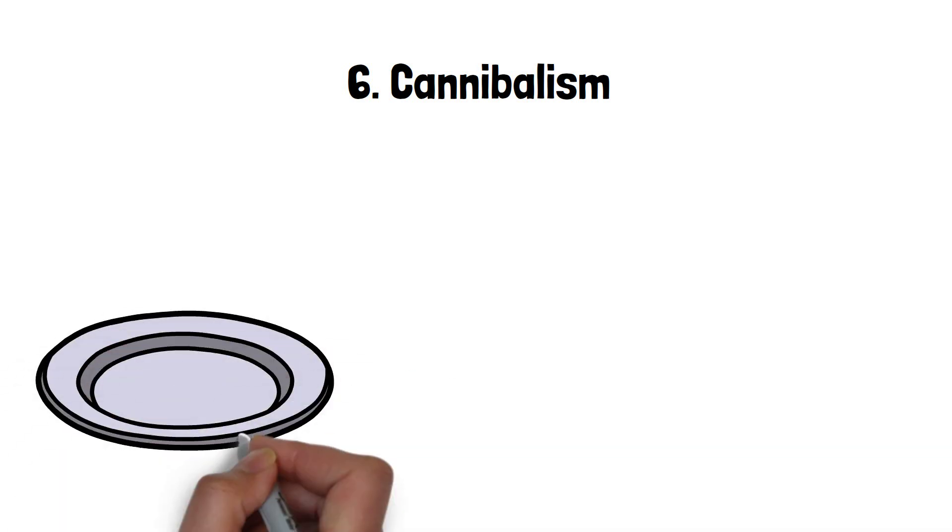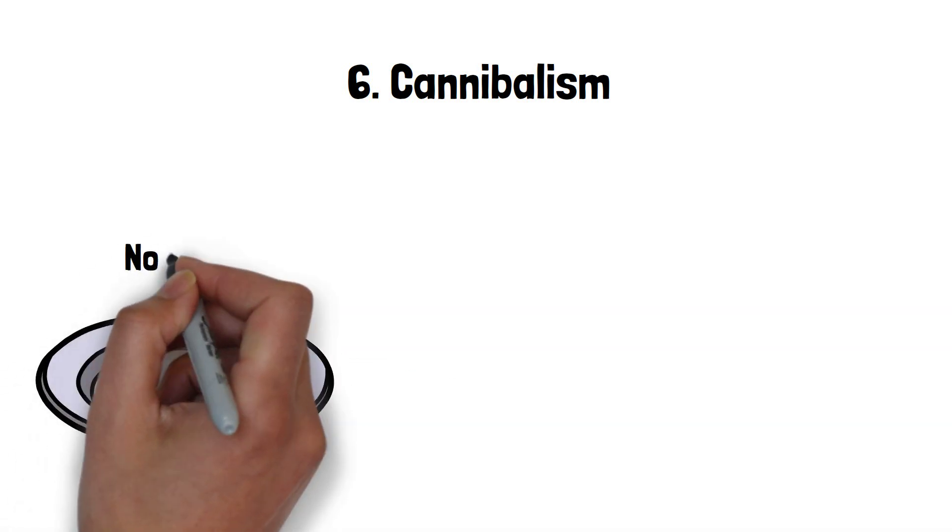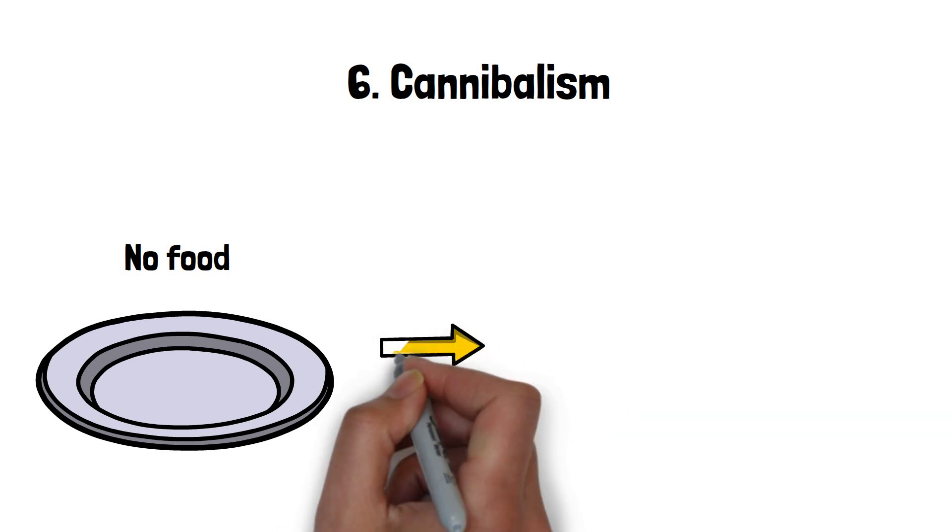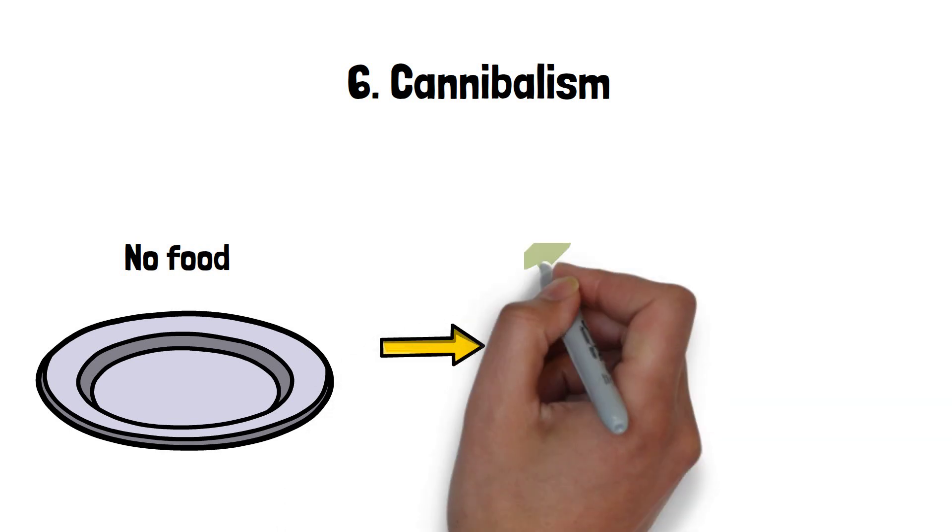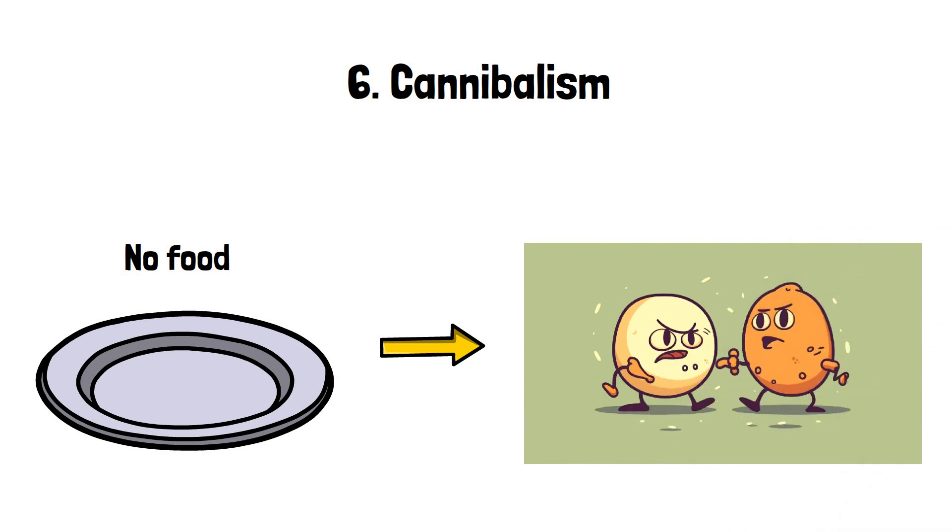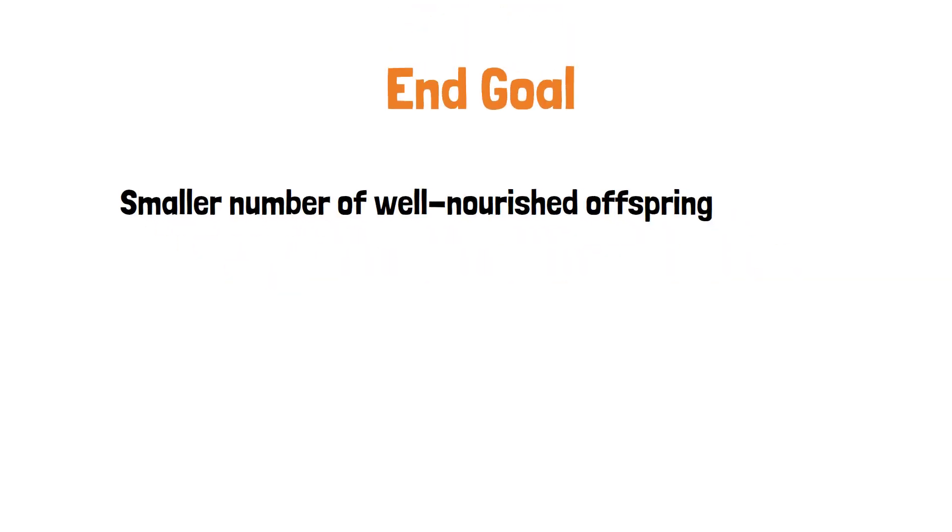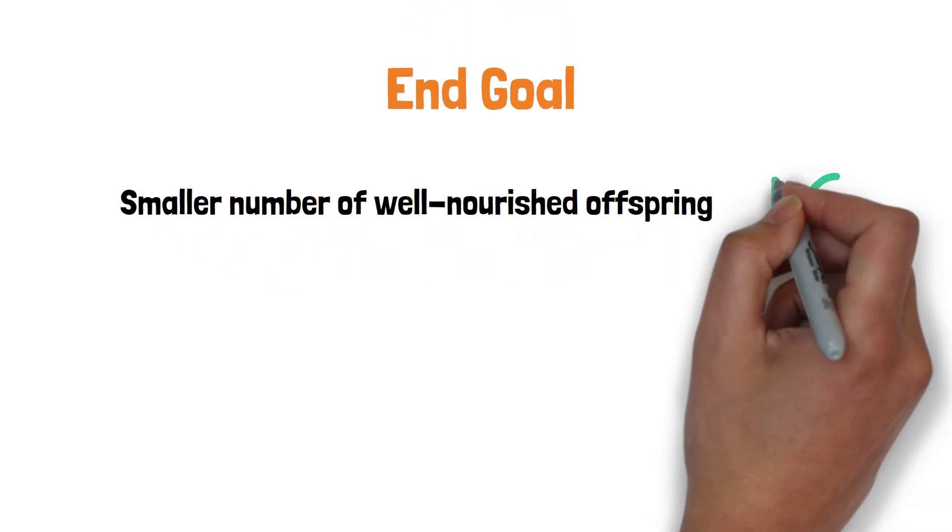6. Cannibalism as a survival strategy. In certain snail species, cannibalism can be a survival strategy for the eggs. When resources are scarce, some snail embryos will consume other eggs within the same clutch. This ensures the survival of a smaller number of well-nourished offspring instead of a larger number of weaker individuals.